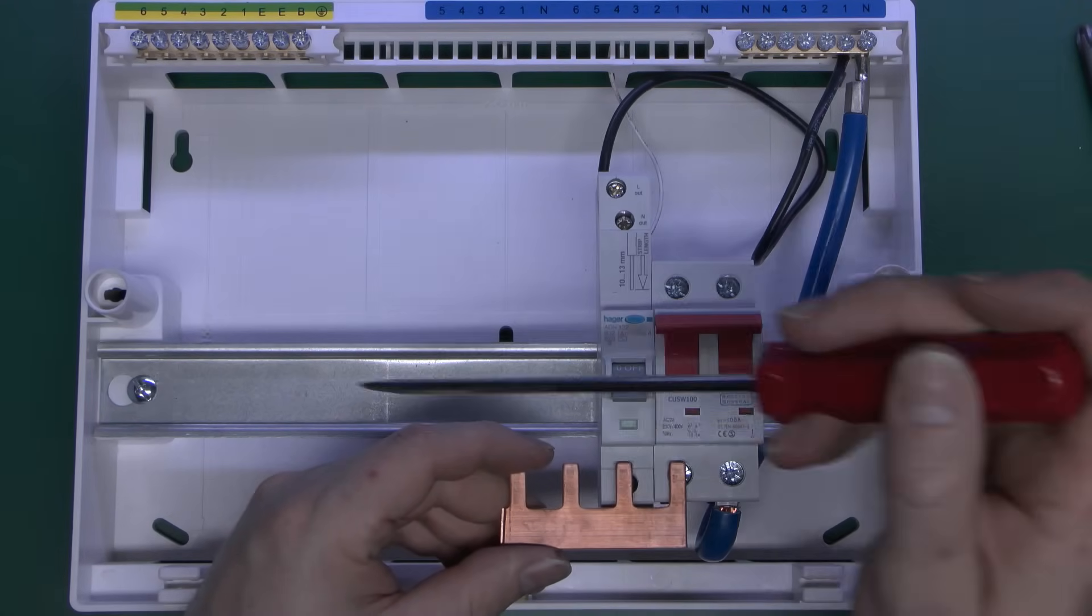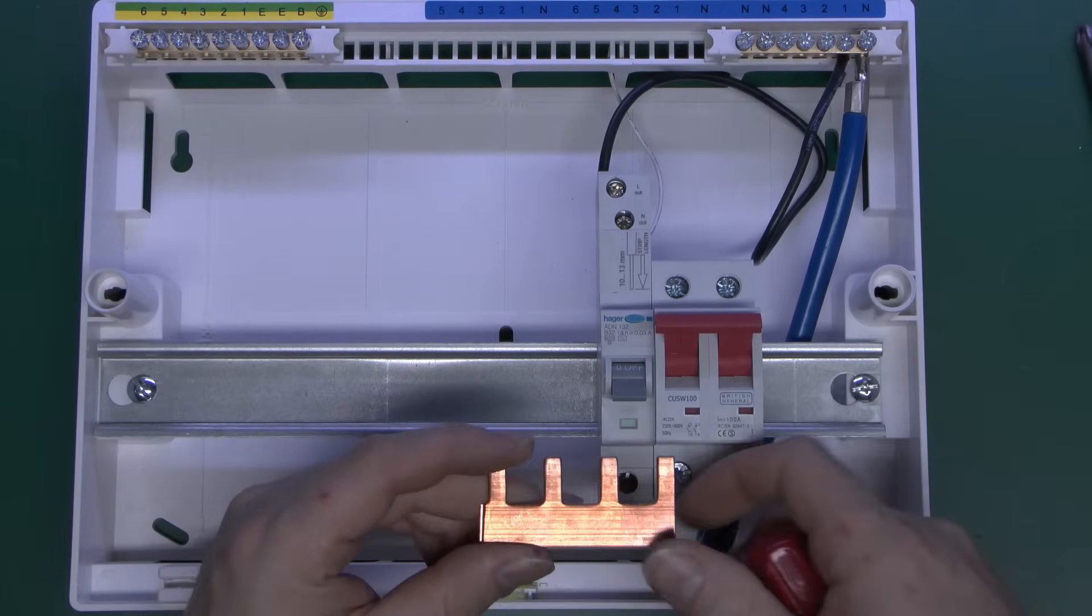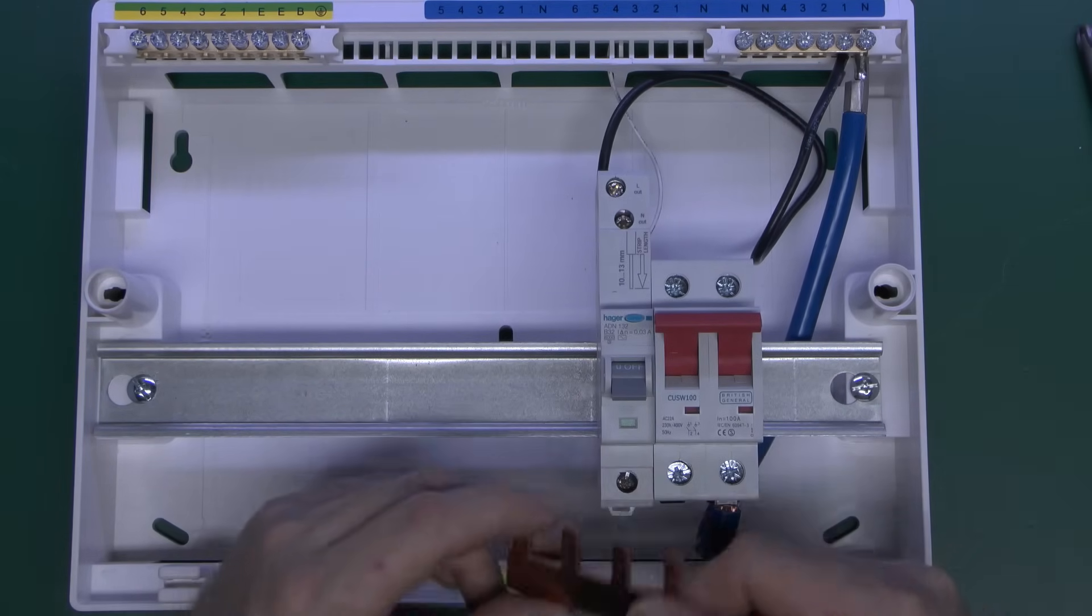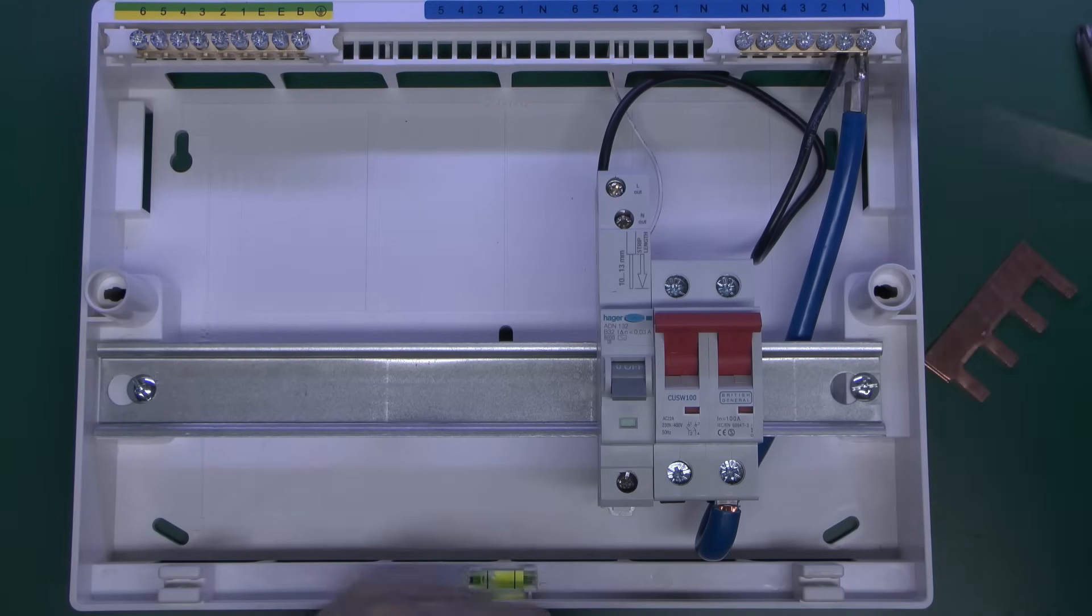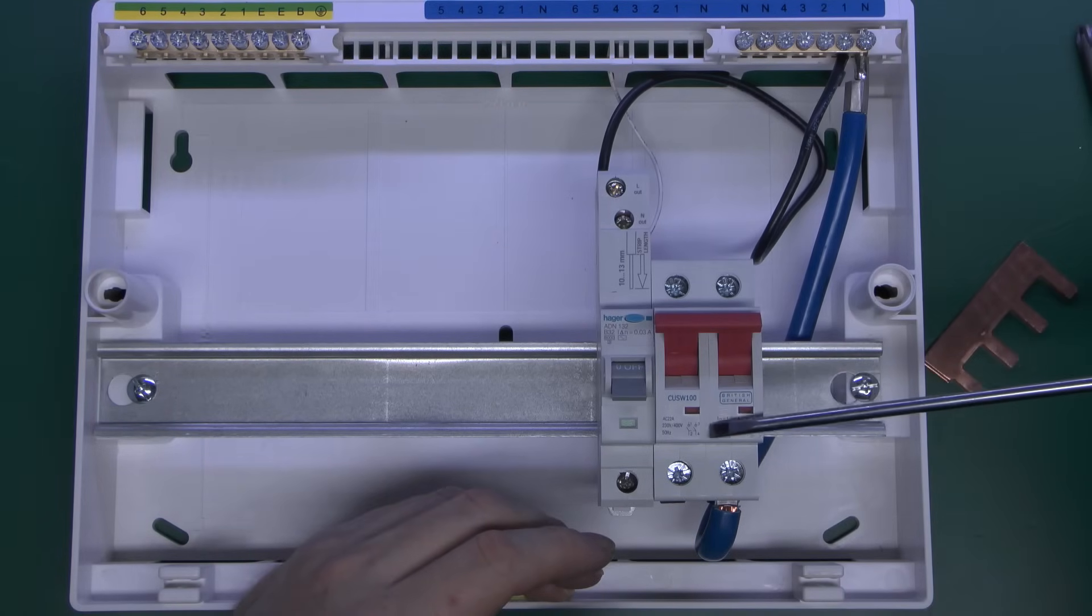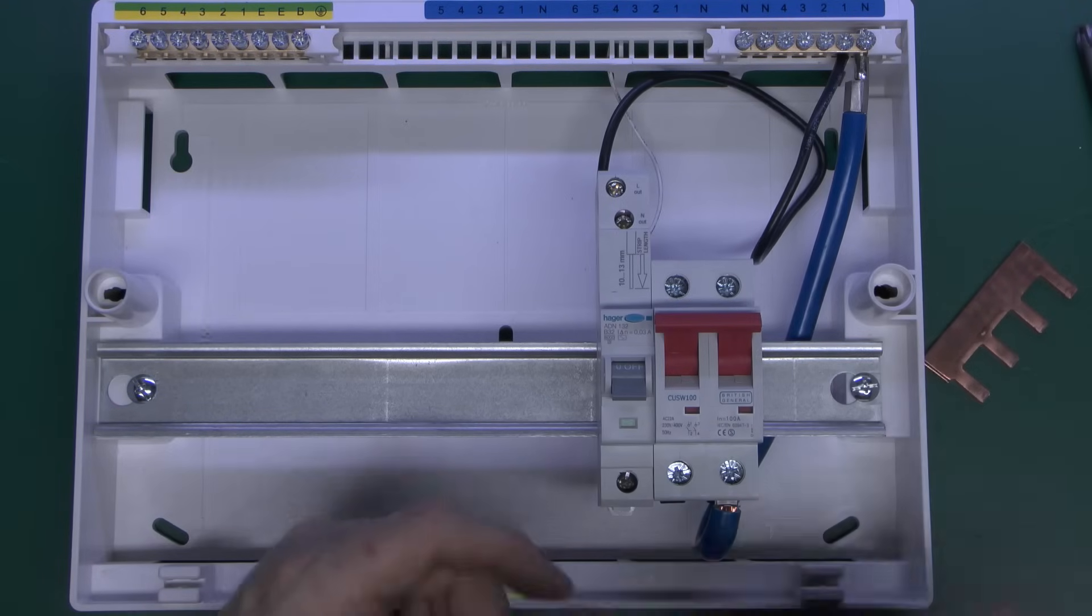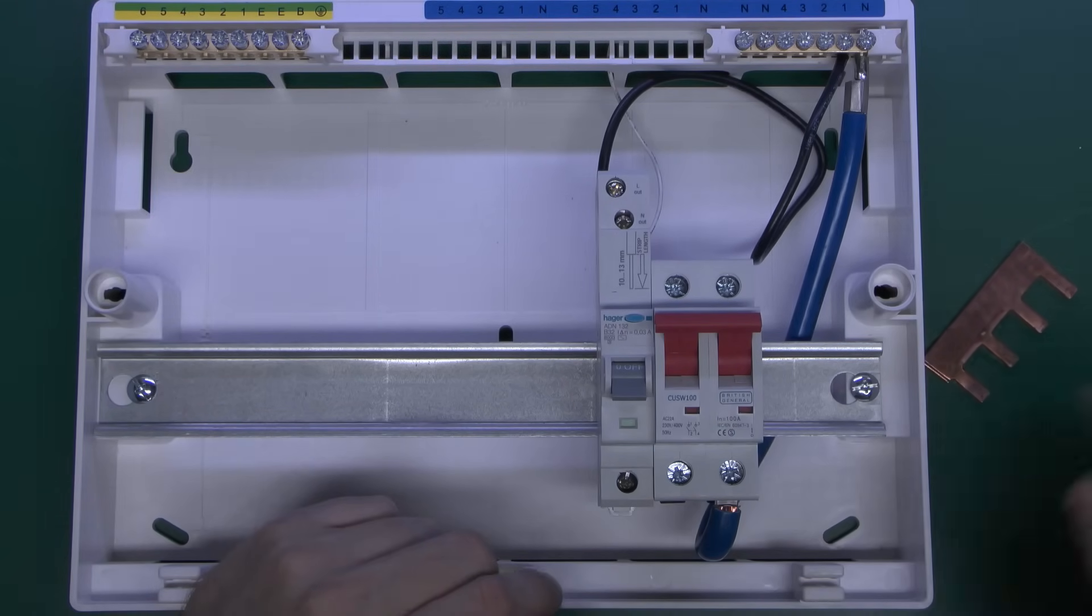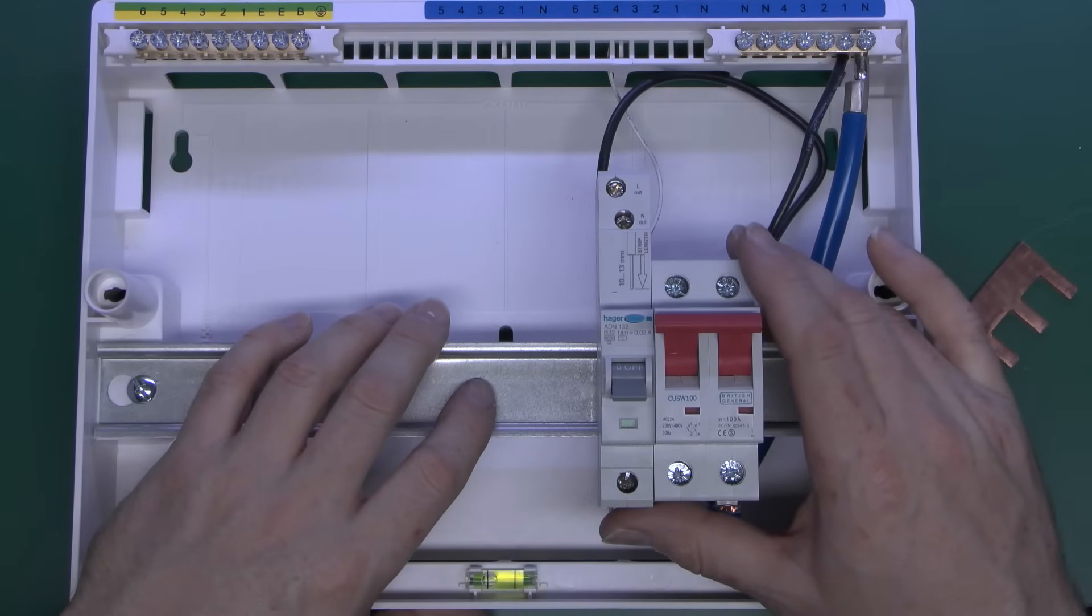And of course you can have as many of these devices in here as will fit just obviously a longer bar this is just a short piece here for demonstration purposes and I'll just put out the this is a Hager one and this is not a Hager consumer unit but again this is just a demonstration normally would not mix manufactured devices but it just happens to be what's available at the time.